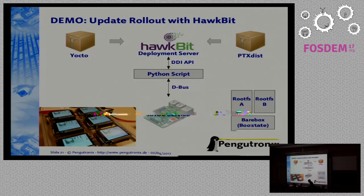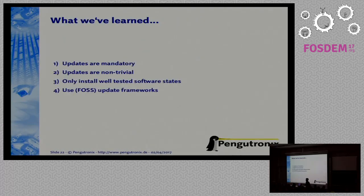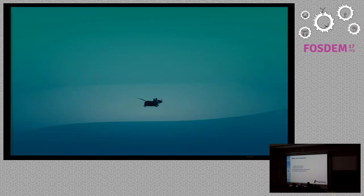So let's check the time — I have about two minutes. Now for a demonstration. As you can see here, these are six Raspberry Pis currently running a PTXdist-based image. This includes the RAUC update tool, and I'm trying to trigger an update before continuing the talk.